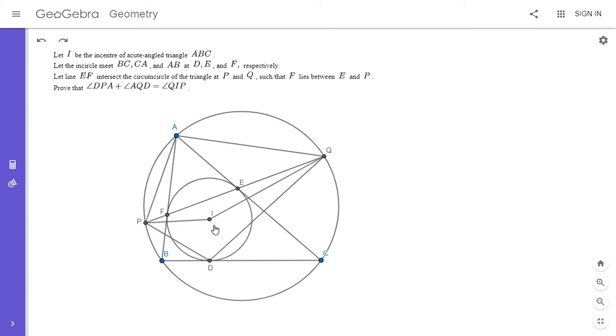So I is the incenter of triangle ABC. The incircle meets BC, CA, and AB at D, E and F. Then we draw the line EF and let it hit the circumcircle at P and Q as shown. And then we want to prove that angle DPA plus angle AQD is equal to angle QIP. Not a hugely complicated configuration, but it's hard to wrap your head around how to show the angle sum condition.